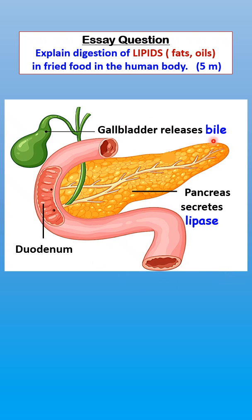To summarise: bile is produced by the liver but stored in the gallbladder. The gallbladder releases bile into the duodenum to emulsify the lipids. The pancreas then secretes the enzyme lipase into the duodenum for the hydrolysis of lipids into fatty acids and glycerol.